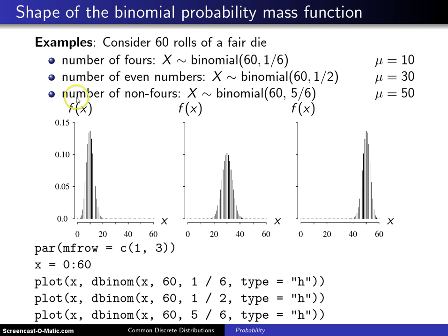Finally, the last example is the number of non-4s. In this case X is binomial with 60 trials once again, and the probability of not rolling a 4 is 5/6.